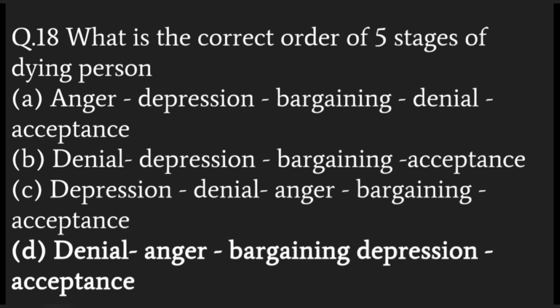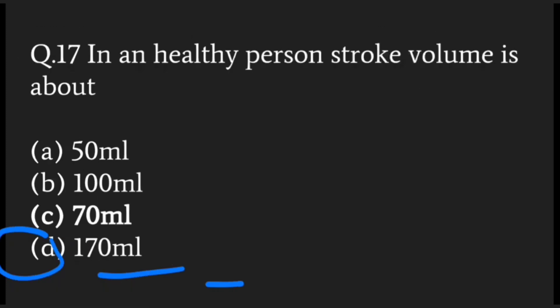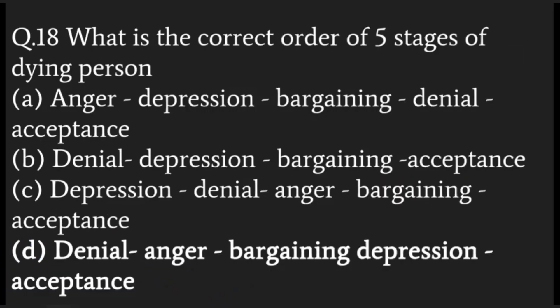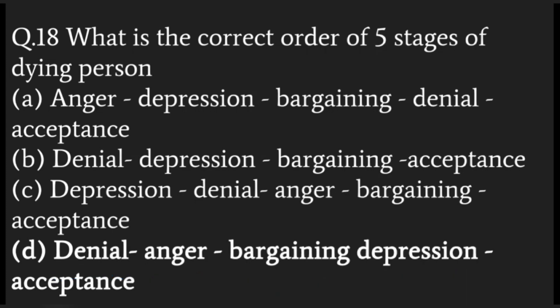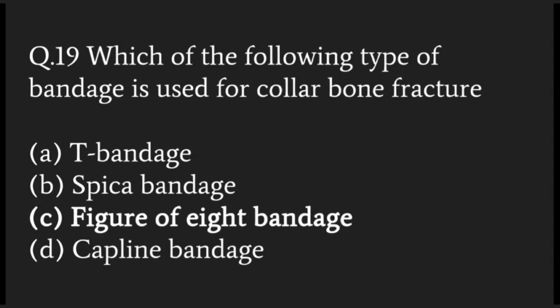What is the correct order of the five stages of dying? The correct answer is denial, anger, bargaining, depression, and acceptance — known as the Kübler-Ross model.